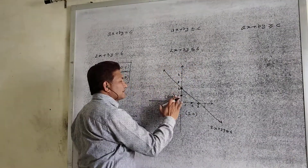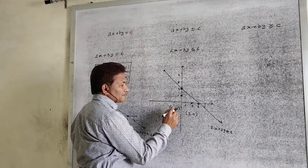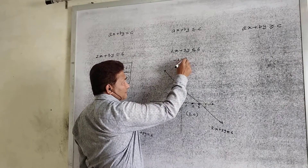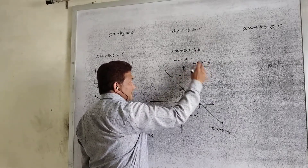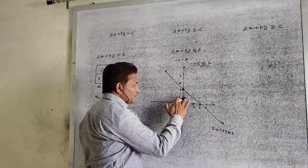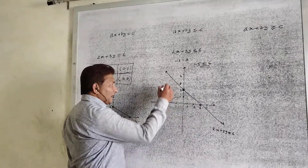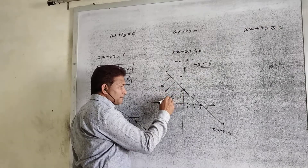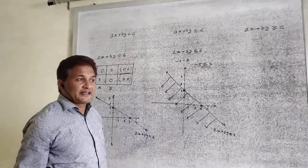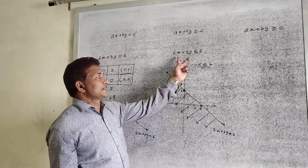Again, find all such points. Consider the point (-1, -1). Put this value: we get minus 2 plus minus 3, which gives minus 5, which is less than 6. Hence this point satisfies the given condition. We are getting points which are below the line. After checking all the points below the line, we get that all points below this line satisfy the given condition.